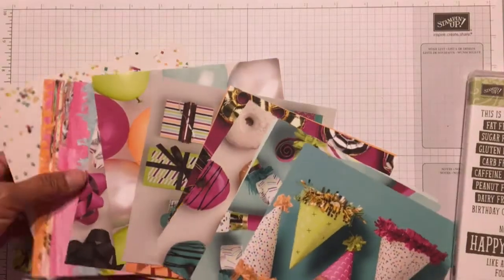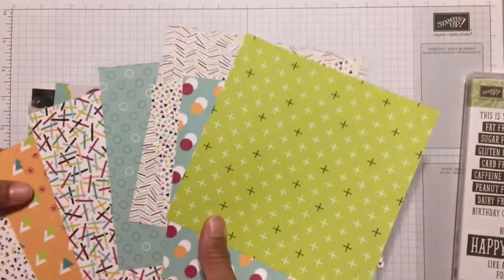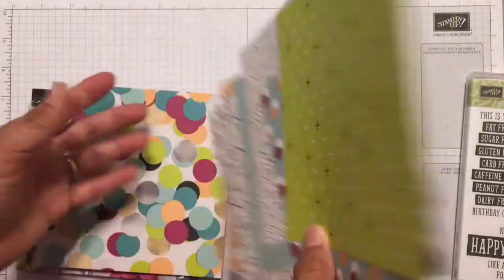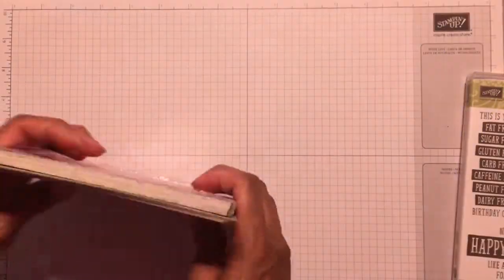I actually used all the coordinating colors, which are Bermuda Bay, Berry Burst, Lemon Lime Twist, Peekaboo Peach, and Pool Party, besides black and white. I used Berry Burst only on the first card. On the second one, I used black instead.